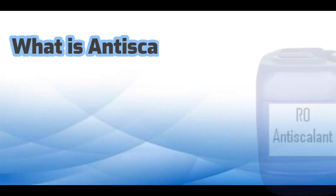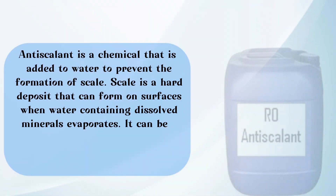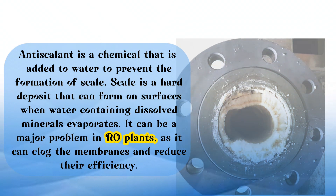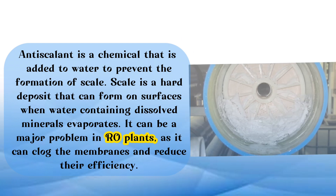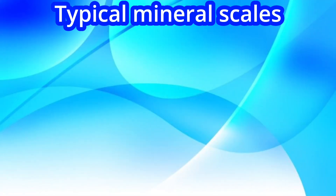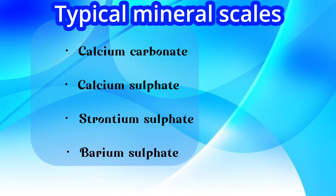Antiscalant is a chemical that is added to water to prevent the formation of scale. Scale is a hard deposit that can form on surfaces when water containing dissolved minerals evaporates. It can be a major problem in RO plants, as it can clog the membranes and reduce their efficiency. The most typical mineral scales to be concerned about are calcium carbonate, calcium sulfate, strontium sulfate, and barium sulfate.